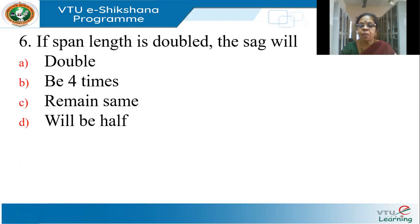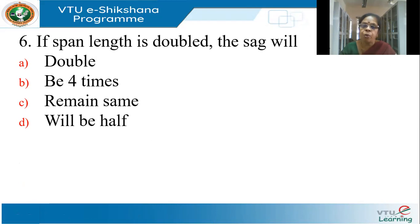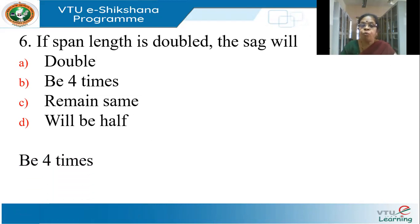If we double the span length, what will happen to the sag? Sag equals WL² / 8T. If we double L, sag increases by L squared, meaning sag will increase by 4 times.